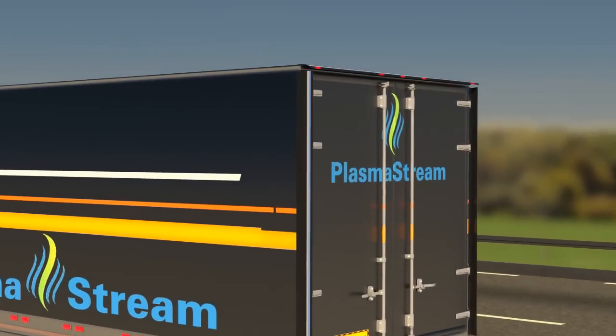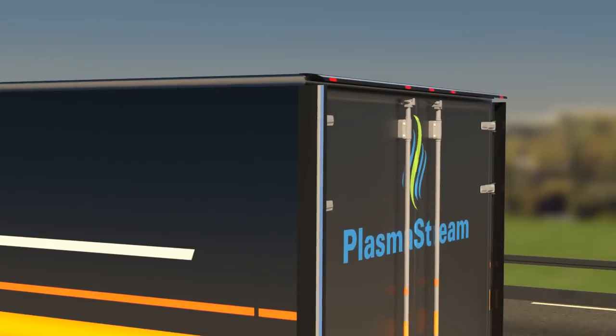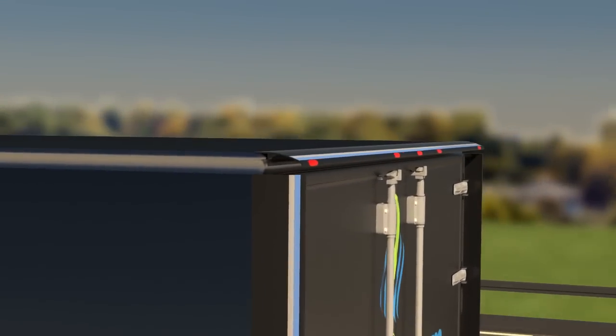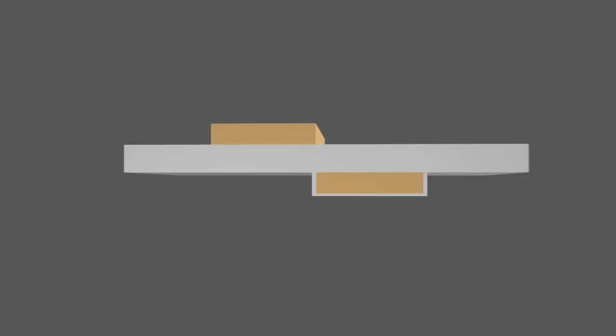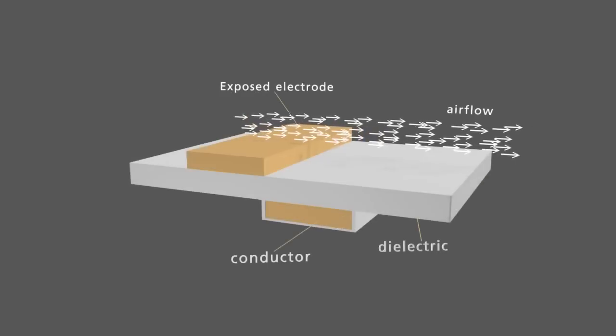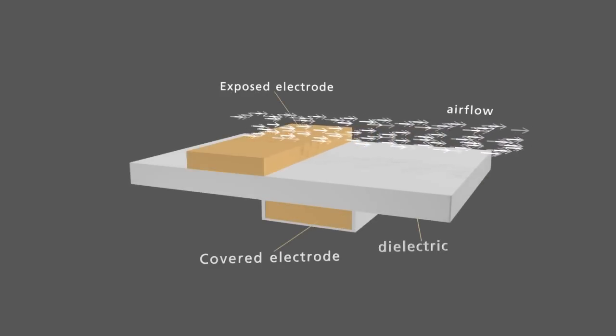To fully understand how PlasmaStream's technology works, we need to take a look into the core of the system which is driven by plasma actuators. A plasma actuator is a three-layer tape that consists of two electrodes made of conductive materials such as copper, separated by a dielectric material such as plastic. One of the electrodes is exposed to air, while the other electrode is covered by dielectric material.